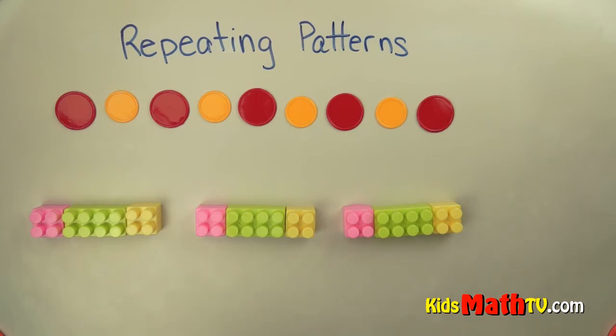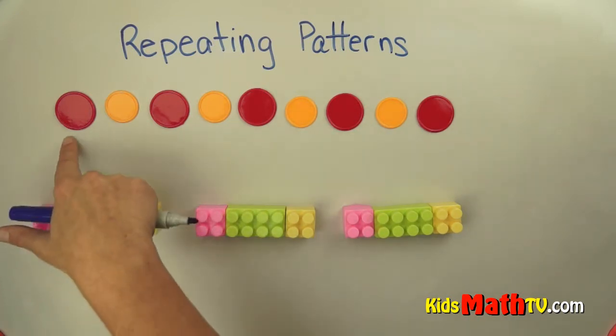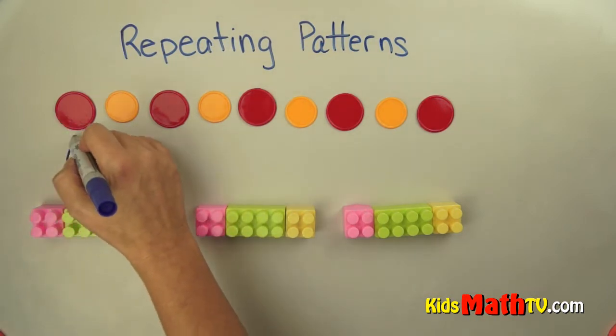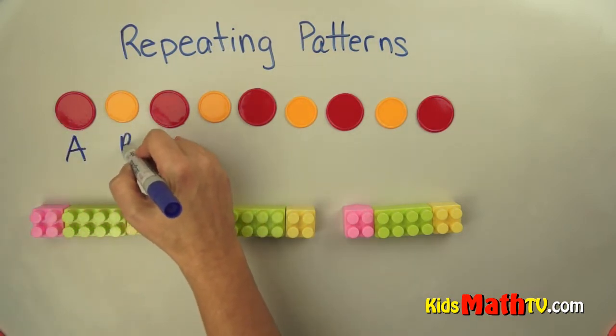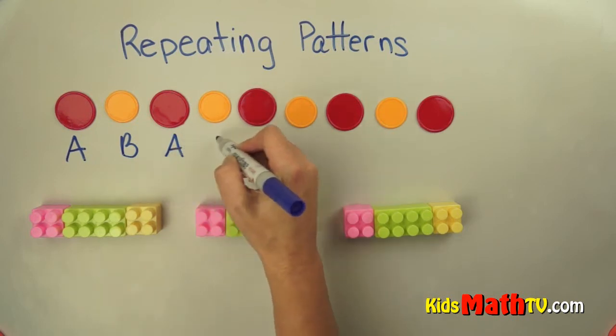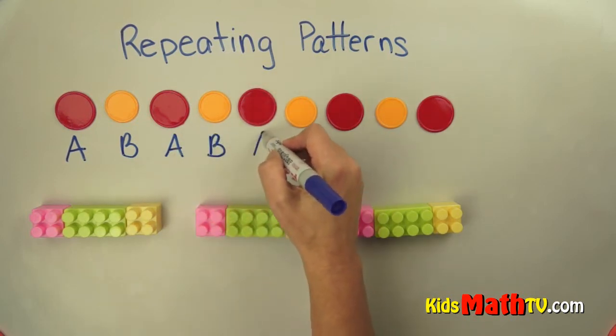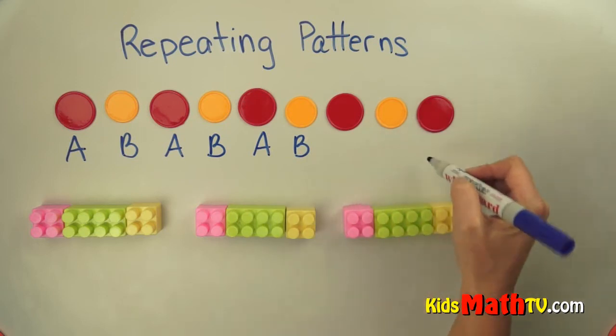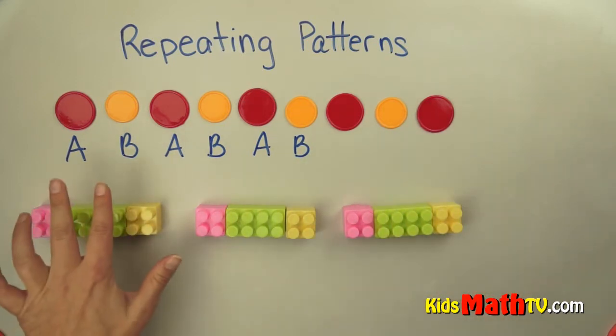When we do this, we call these different types of patterns. This is like an A-B pattern. If red is A, yellow is B. Red is A, yellow is B. Red is A, yellow is B, and so on and so forth. So that's an A-B pattern. Two things repeat.